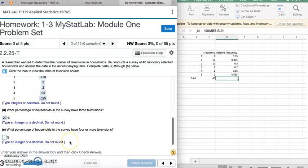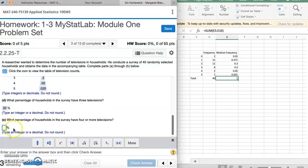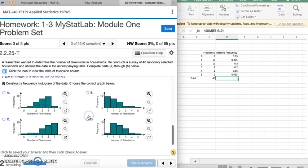Now here, what percentage of households in the survey have four or more televisions? That means how many have four or five. That means we need to add these numbers together to see who has four or more. That's 0.075. Remember, we're dealing with a percentage. So 0.075 times 100 gives us 7.5%. So we can say that 7.5% of the households have four or more televisions.